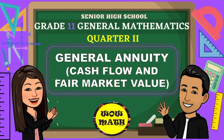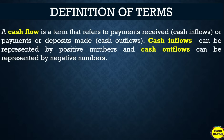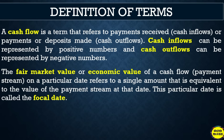Good day everyone. In this video lesson, we will discuss cash flow and fair market value. Cash flow refers to payments received, called cash inflows, or payments made, called cash outflows. Cash inflows are represented by positive numbers and cash outflows by negative numbers. The fair market value or economic value of a cash flow on a particular date refers to a single amount equivalent to the value of the payment stream at that date. This particular date is called the focal date.